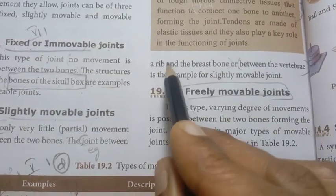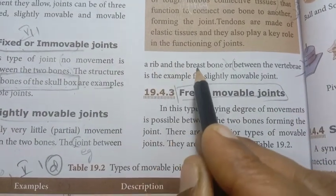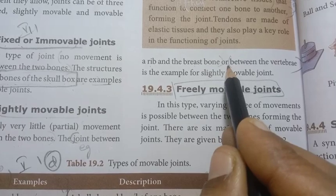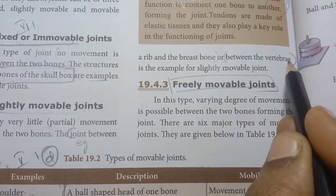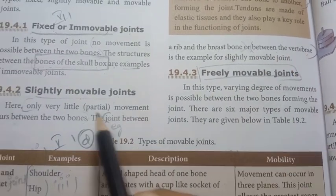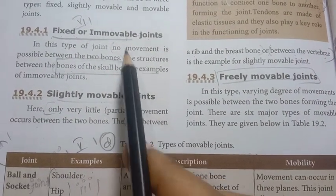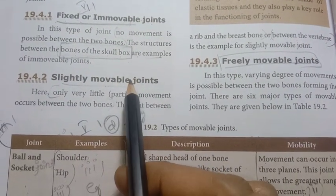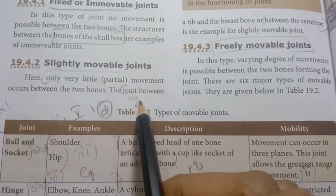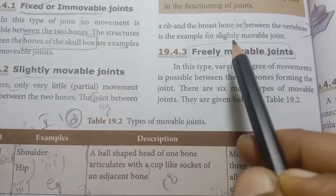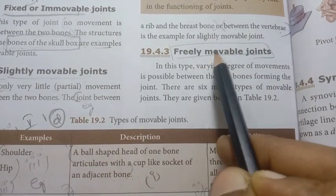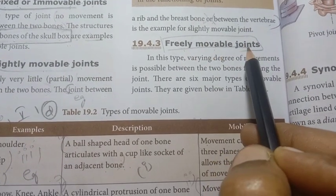Example of slightly movable joint: the joint between the rib and the breast bone, or between the vertebrae. So: first, fixed or immovable joint; second, slightly movable joint; third, freely movable joint.